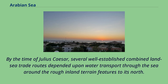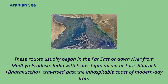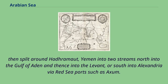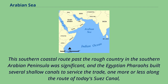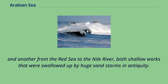By the time of Julius Caesar, several well-established combined land-sea trade routes depended upon water transport through the sea, bypassing the rough inland terrain to its north. These routes usually began in the far east or down river from Madhya Pradesh, India, with transshipment via historic Bharuch, traversing past the inhospitable coast of modern-day Iran. They then split around Hadramaut, Yemen — north into the Gulf of Aden and thence into the Levant, or south into Alexandria via Red Sea ports such as Aksum. Each major route involved transhipping to pack animal caravans, traveling through desert country with risk of bandits and extortionate tolls. The Egyptian pharaohs built several shallow canals to service the trade, including one along the route of today's Suez Canal, and another from the Red Sea to the Nile River, both of which were swallowed up by sandstorms in antiquity.